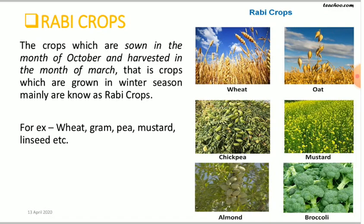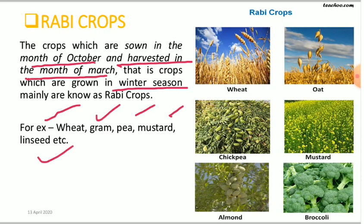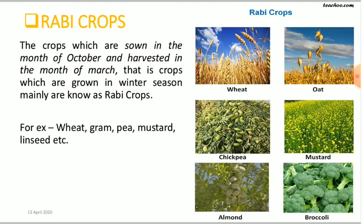Now let's look at Rabi crops. These are crops sown in the month of October and harvested in March — they are winter season crops. Some examples are wheat, gram, peas, mustard, linseed, broccoli, almond, and chickpea.